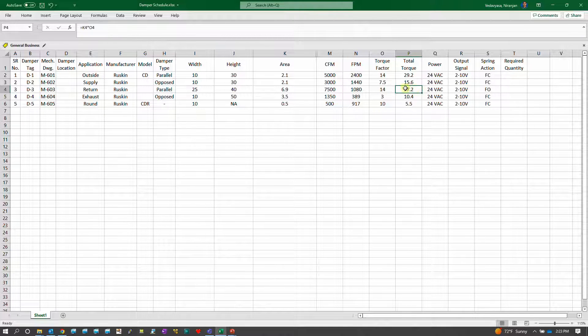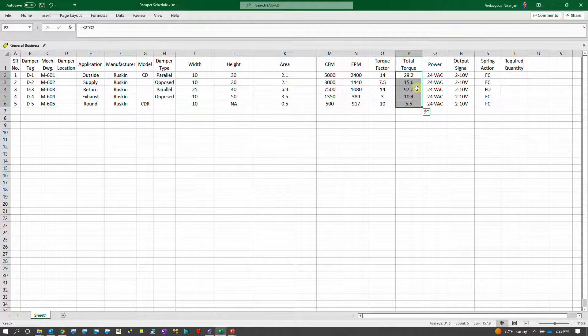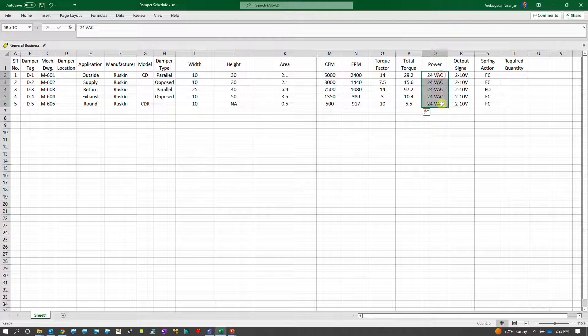It is usually advisable to take at least 20 percent of safety increase. If your total torque is 97, do not size an actuator which is neck to neck of 100 inch lb, at least go more than that and size greater than what you see as a total torque.